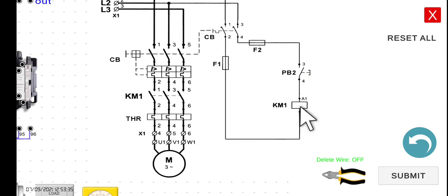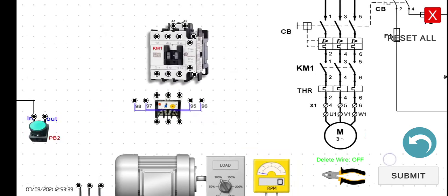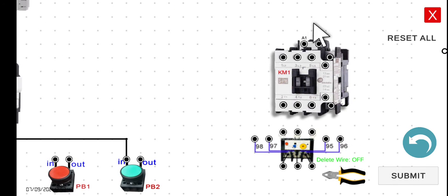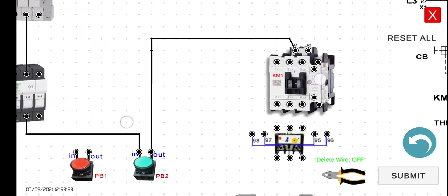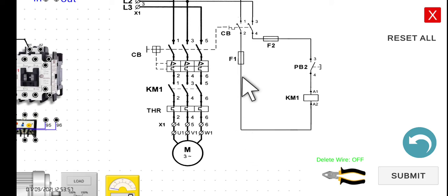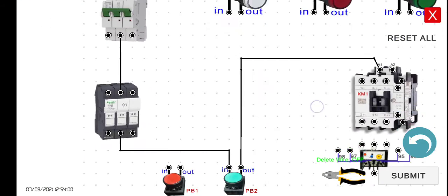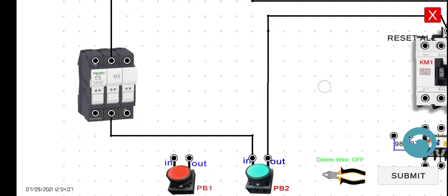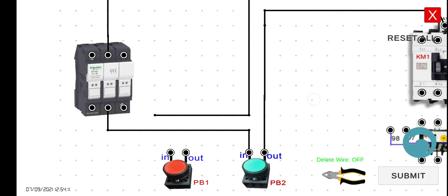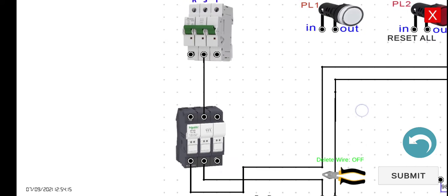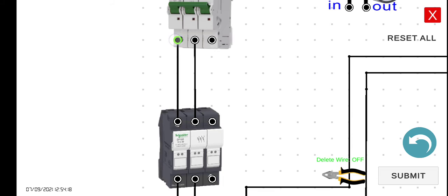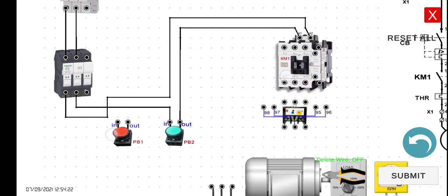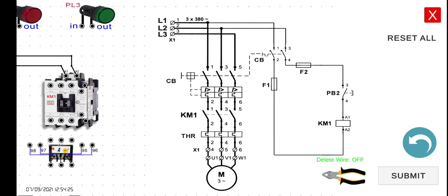The output of the push button will be connected to the A1 of KM1, which is the coil — this part here. A1 is around here. And then going back to A2 — A2 to the output of fuse 1. A2 is around here. We can connect it like that. And then from this relay, from this circuit breaker — from the fuse to the circuit breaker. That's it for the control circuit, which is around here.